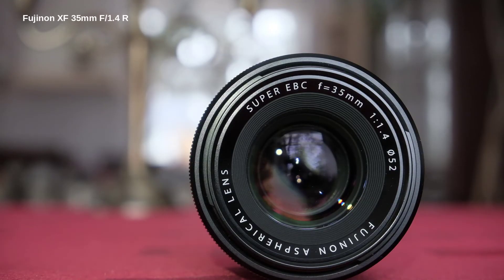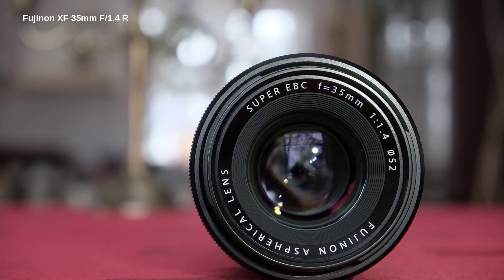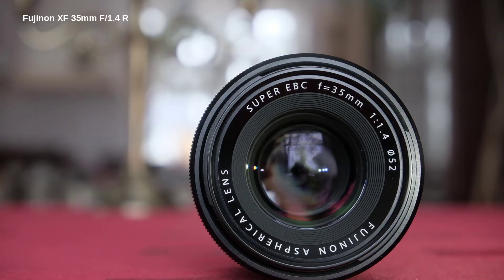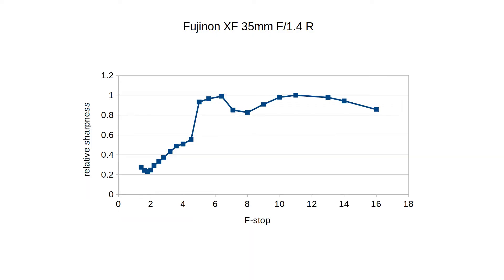The Fuji XF 35mm R is very dear to me. It has a retro character but delivers excellent sharpness, and it's probably my favorite focal length. As expected, I mostly use it wide open, rarely choosing intermediate f-stops. The f5.6 peak likely reflects medium-range handheld landscape photos. The sharpness profile once again shows that familiar hump, which seems to be a trend among certain Fuji primes.